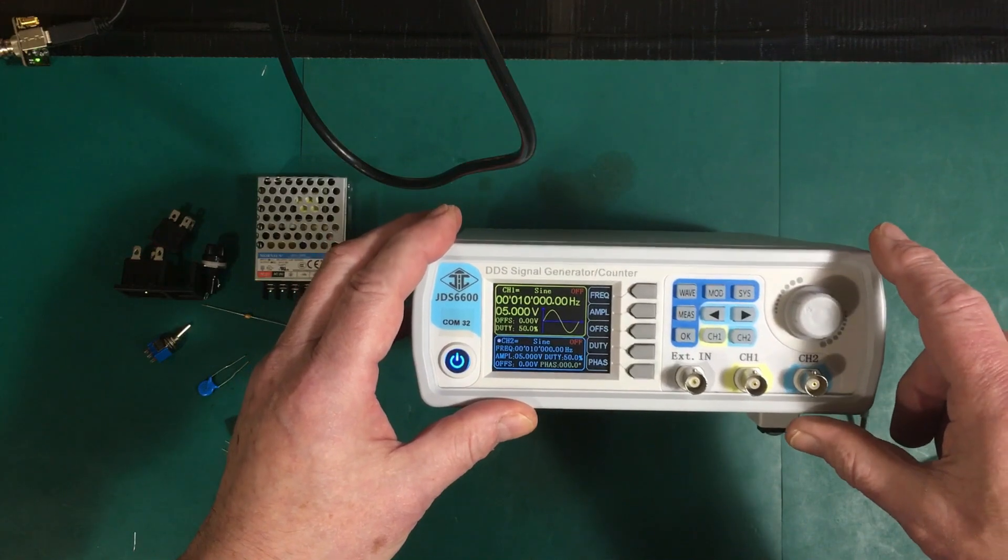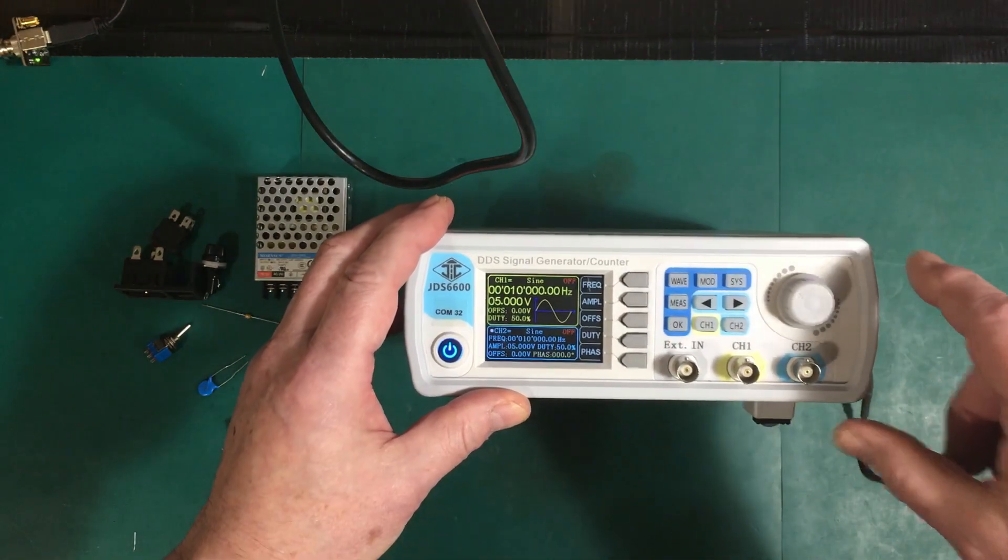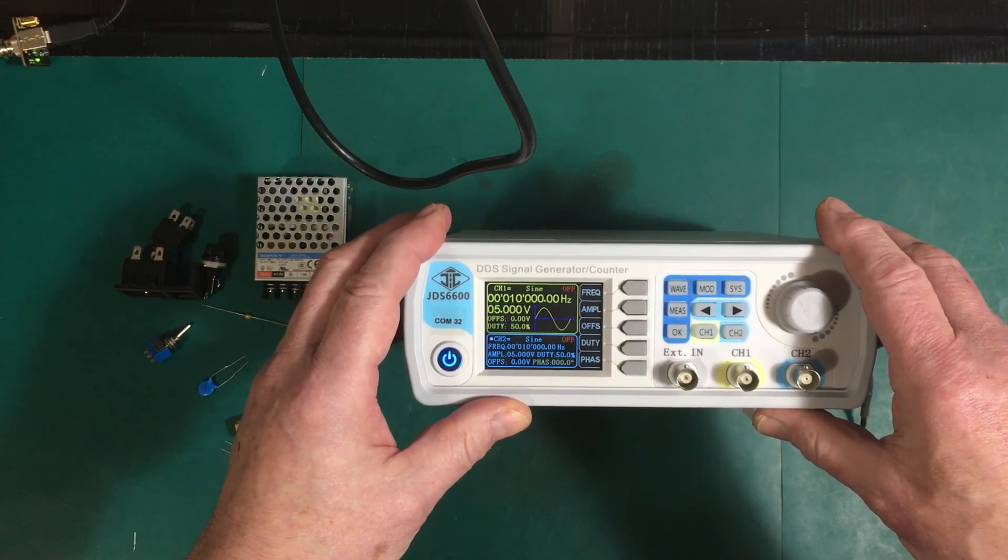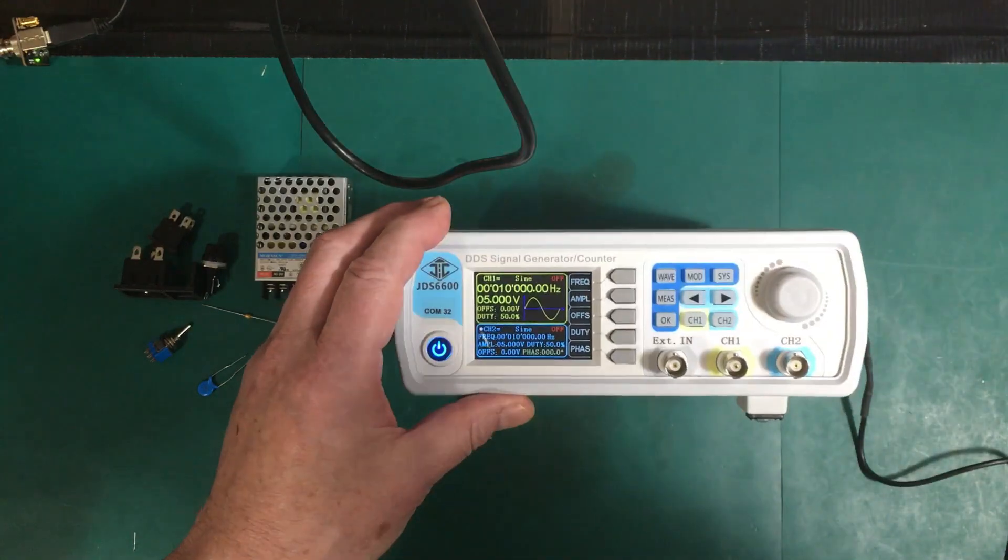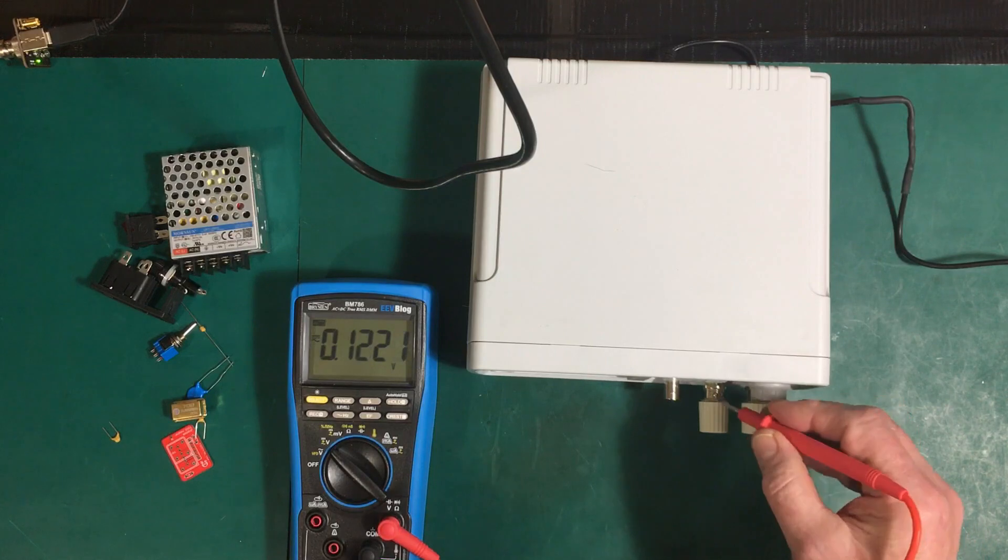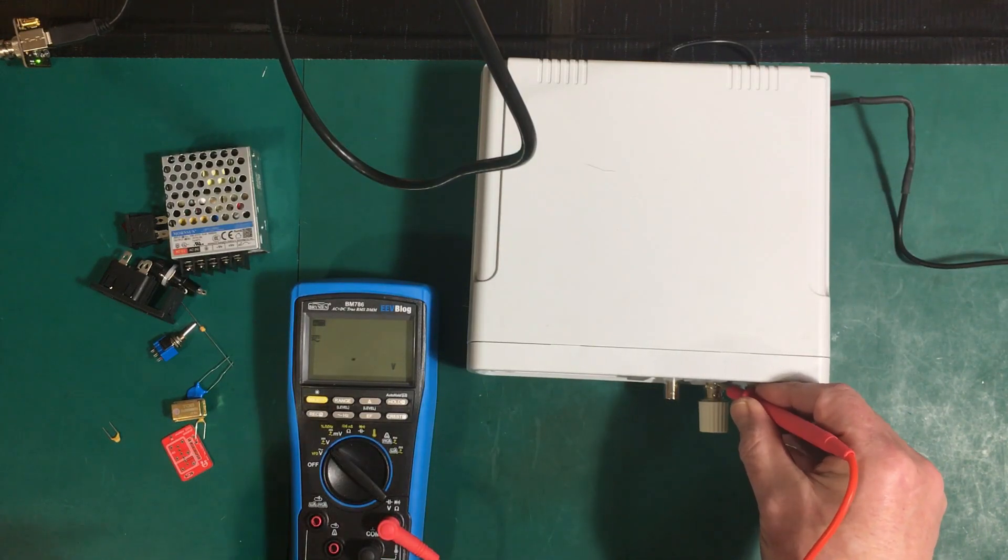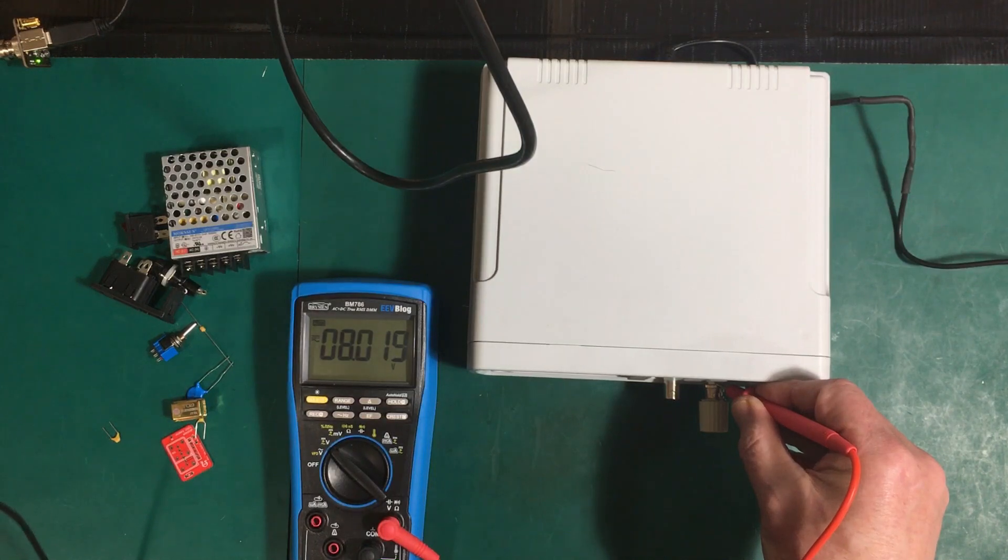This will make it more reliable. When I put 10 kilohertz on it, it's going to be 10 kilohertz and not 9984 Hertz. Let's get started. First I'll show you some of the problems with this wall wart power supply.